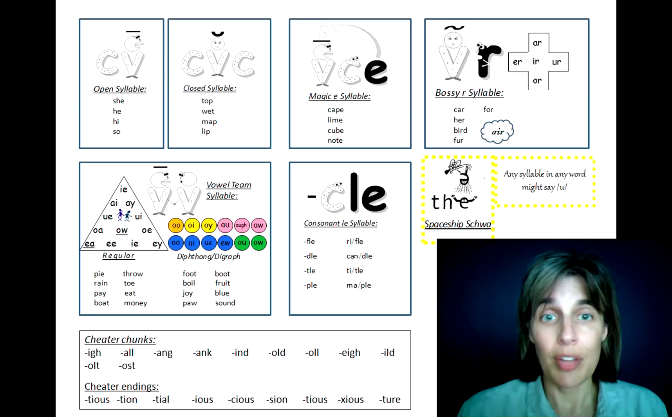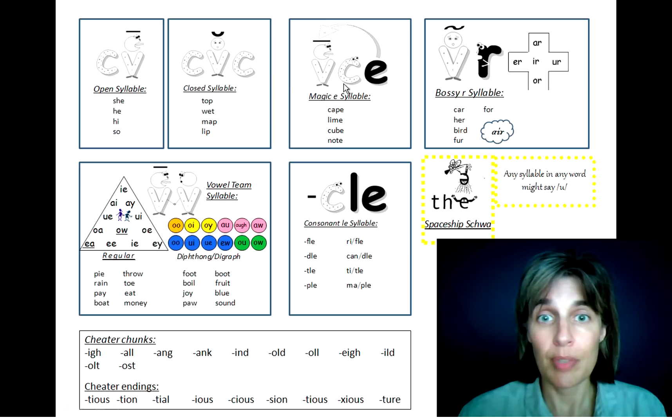So now you know the consonant L-E syllable and now you know all of them. Open syllables. Closed syllables. Magic-E. Bossi-R. Double vowels.